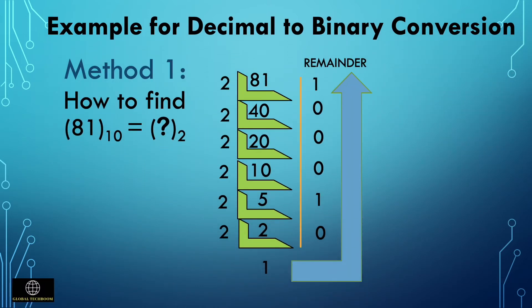Let's see an example for decimal to binary conversion. When using the repeated division by 2 method, one must write the first remainder as the first digit of the binary number. You take all the remainders, ignore the quotients, and assemble them into your binary number. The first remainder is the rightmost bit and the last remainder is the leftmost bit. In this example, converting 81 using successive division: divide 81 by 2, the answer is 40 with remainder 1. Therefore the rightmost bit is 1.